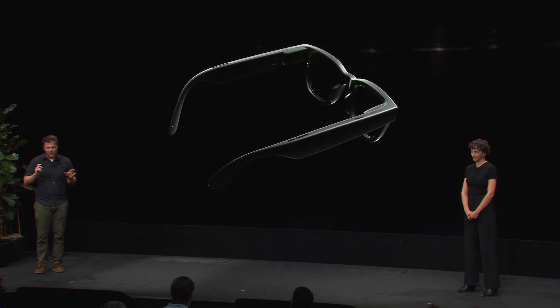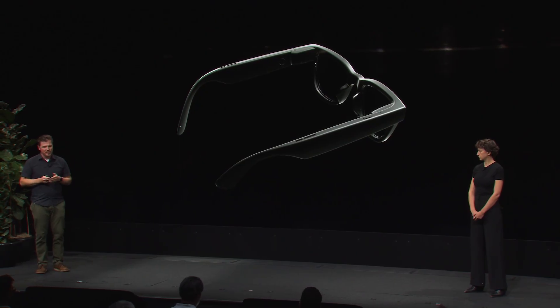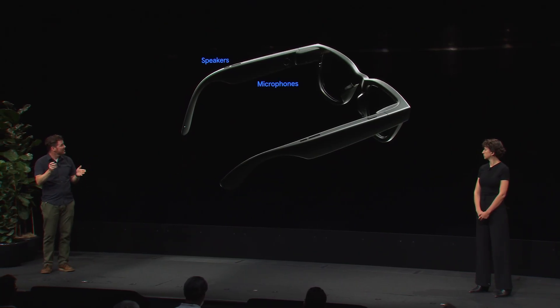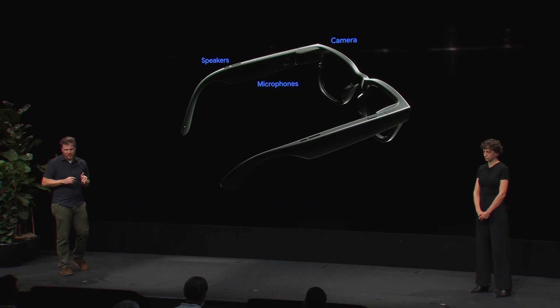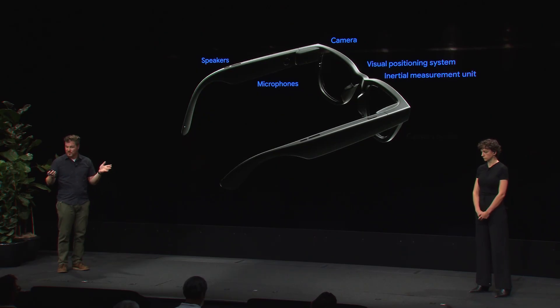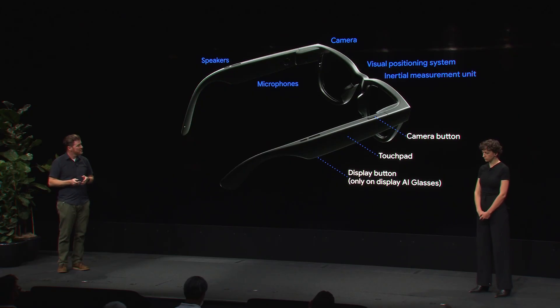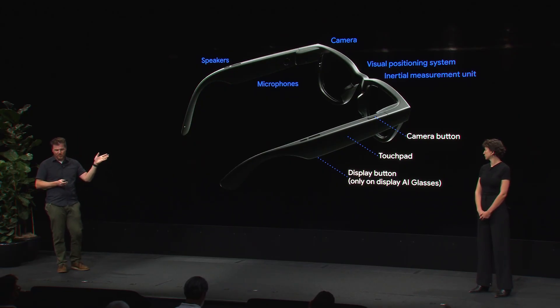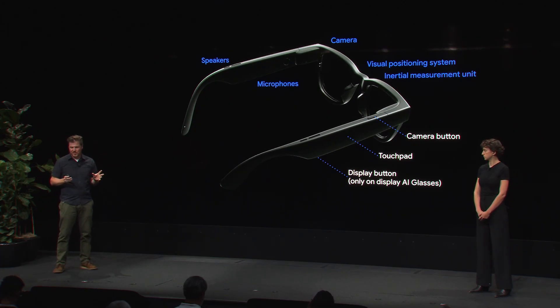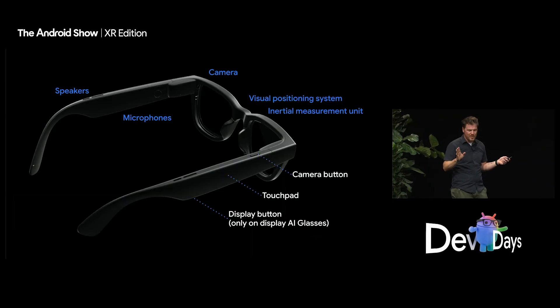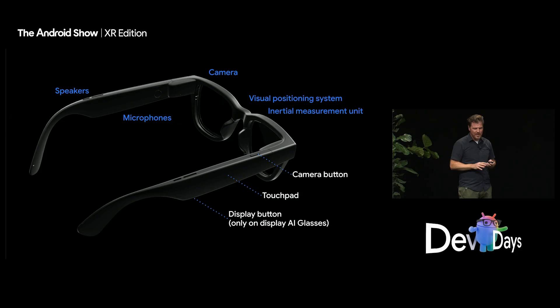The device contains both microphones and speakers, unlocking both input and output. The camera gives you the opportunity to enhance the experiences with a point-of-view image capture or a video stream. The VPS and IMU provide real-time geospatial and positioning information. As for physical input, the glasses provide a camera button, a touch pad, and a display button. When running your app experiences on the glasses, you can respond to a double press on the camera button and to the input events coming from the touch pad. For more information on that, watch the app model on AI glasses talk.